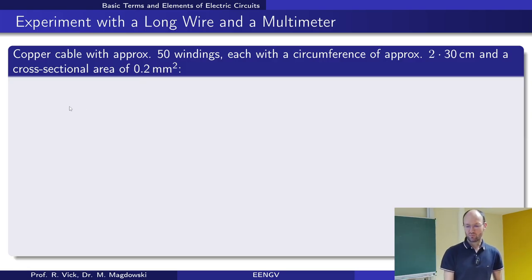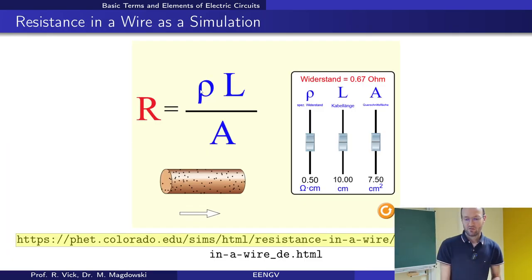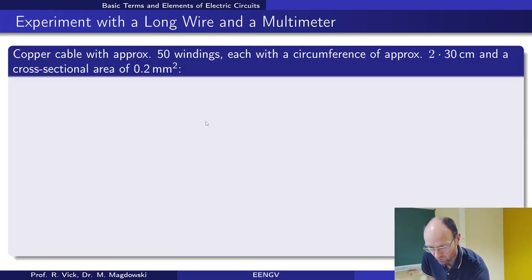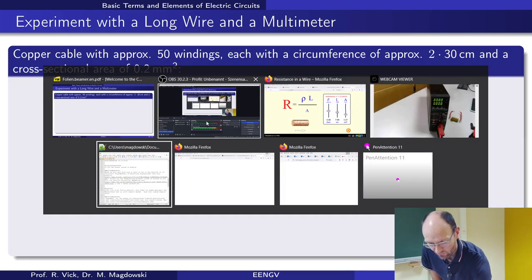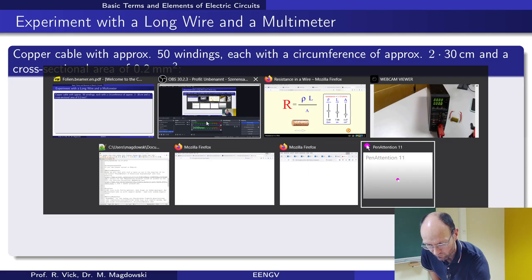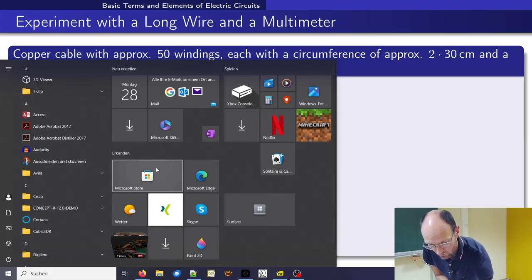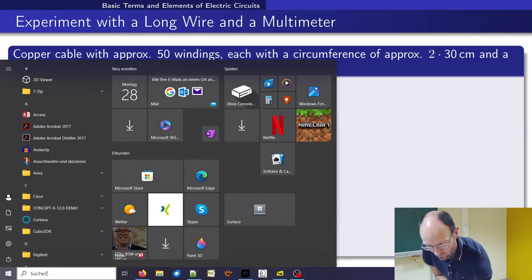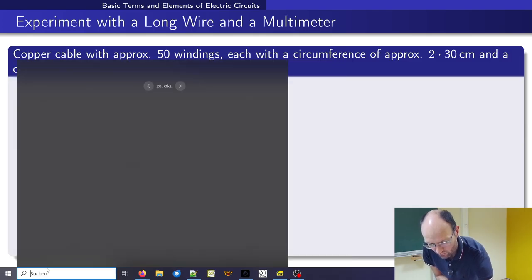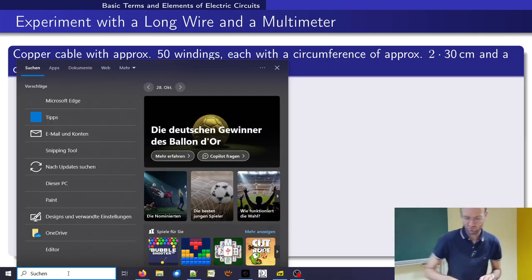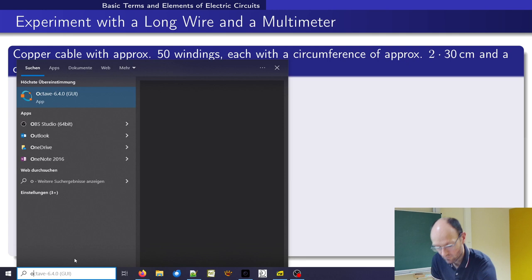And so now from this, if you would calculate the resistance using this formula that we had before, we need length, we need cross section area, and we need this resistivity of copper. So someone needs to find out the resistivity of copper. And I need Octave. And my computer is very slow, hopefully it will not crash. But it's not super hot today.